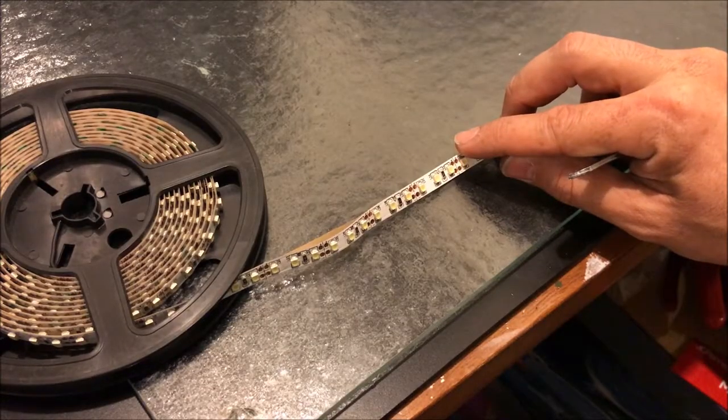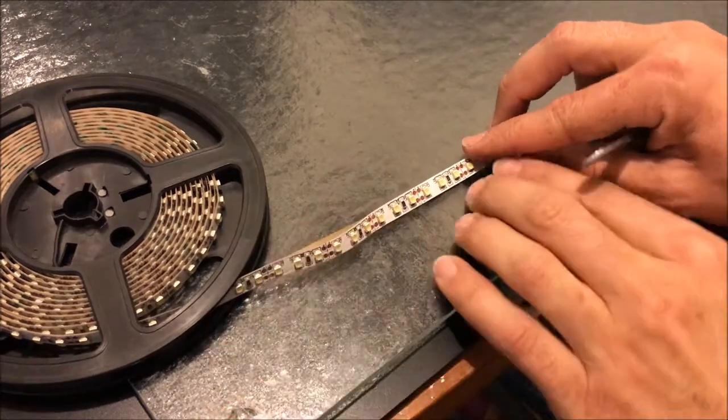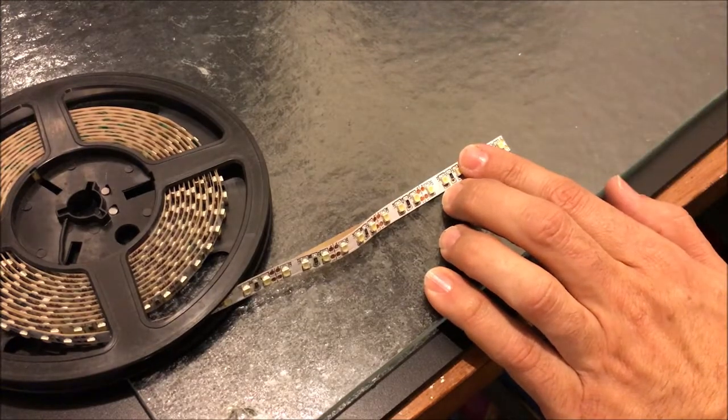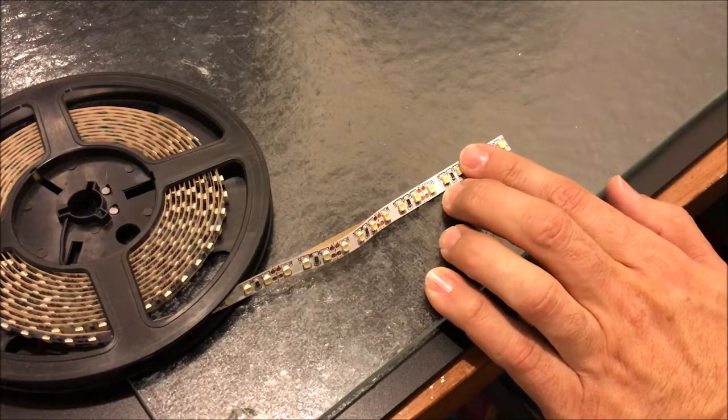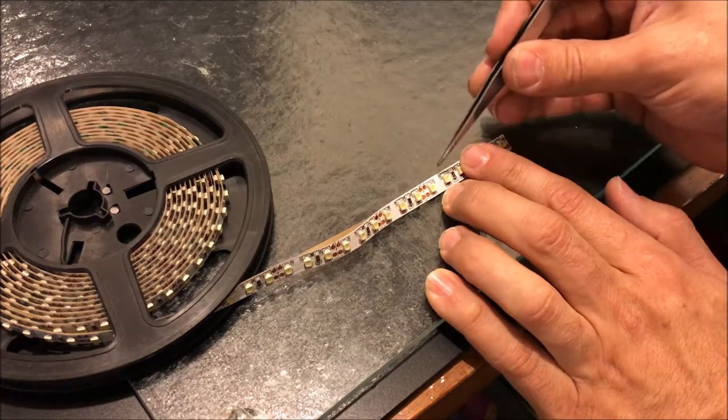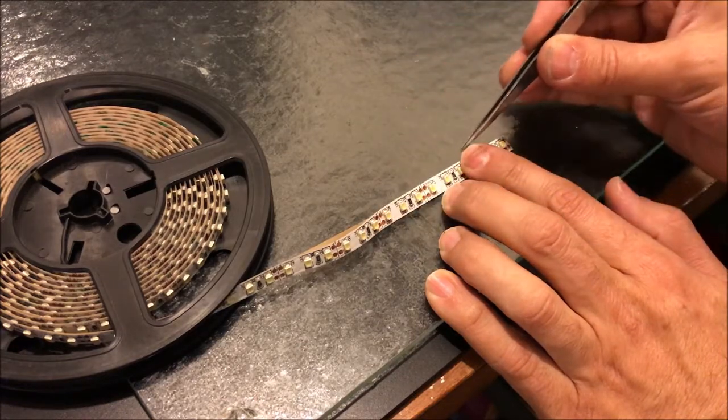So this is LED tape. The tape I have here is cool white. You can get it in warm white. You can get it in cool white. I like the cool white. It leans a little blue more than kind of leaning towards orange. These yellow squares, those are your LEDs on this LED tape.